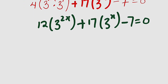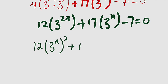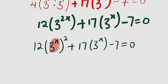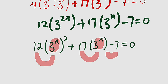According to one of the laws of indices, we can bring the power of 2 outside from this term. So we have 12 multiplied by 3 to the power of x, but to the power of 2, then plus 17 multiplied by 3 to the power of x minus 7, the whole equal to 0. We can consider this as a quadratic equation in terms of 3 to the power of x, which is like saying 12x squared plus 17x minus 7 equal to 0, which is indeed a quadratic equation.